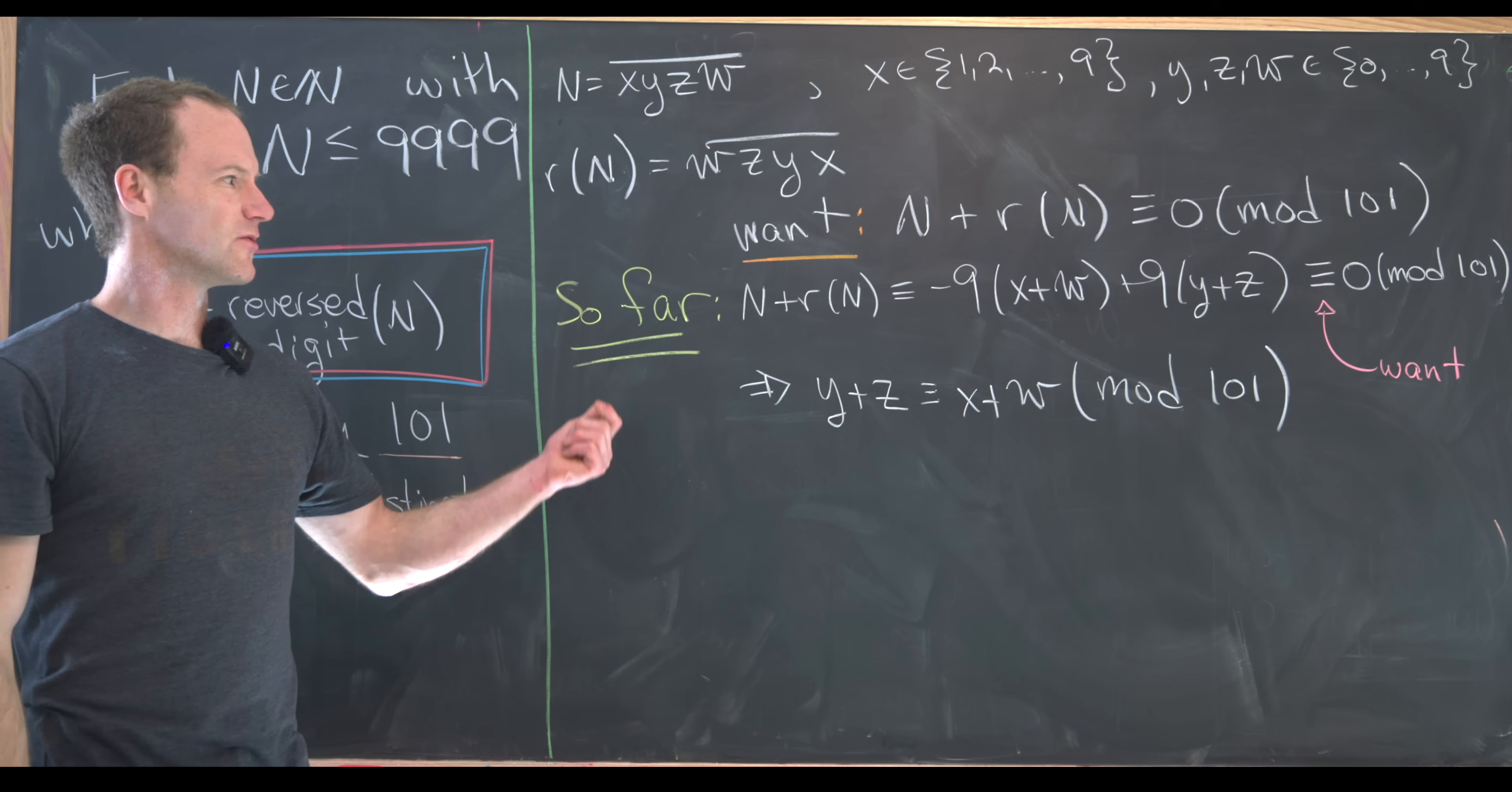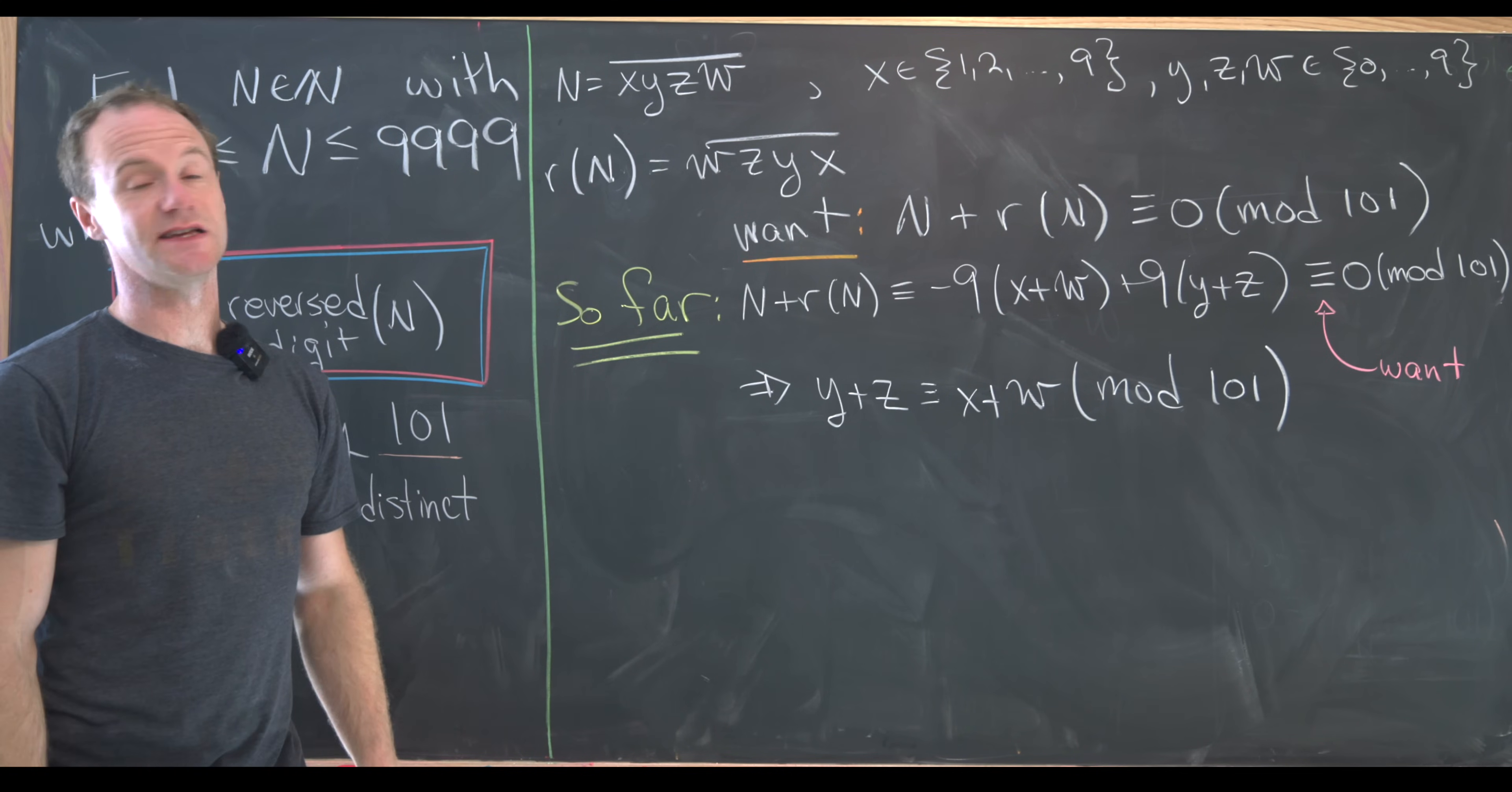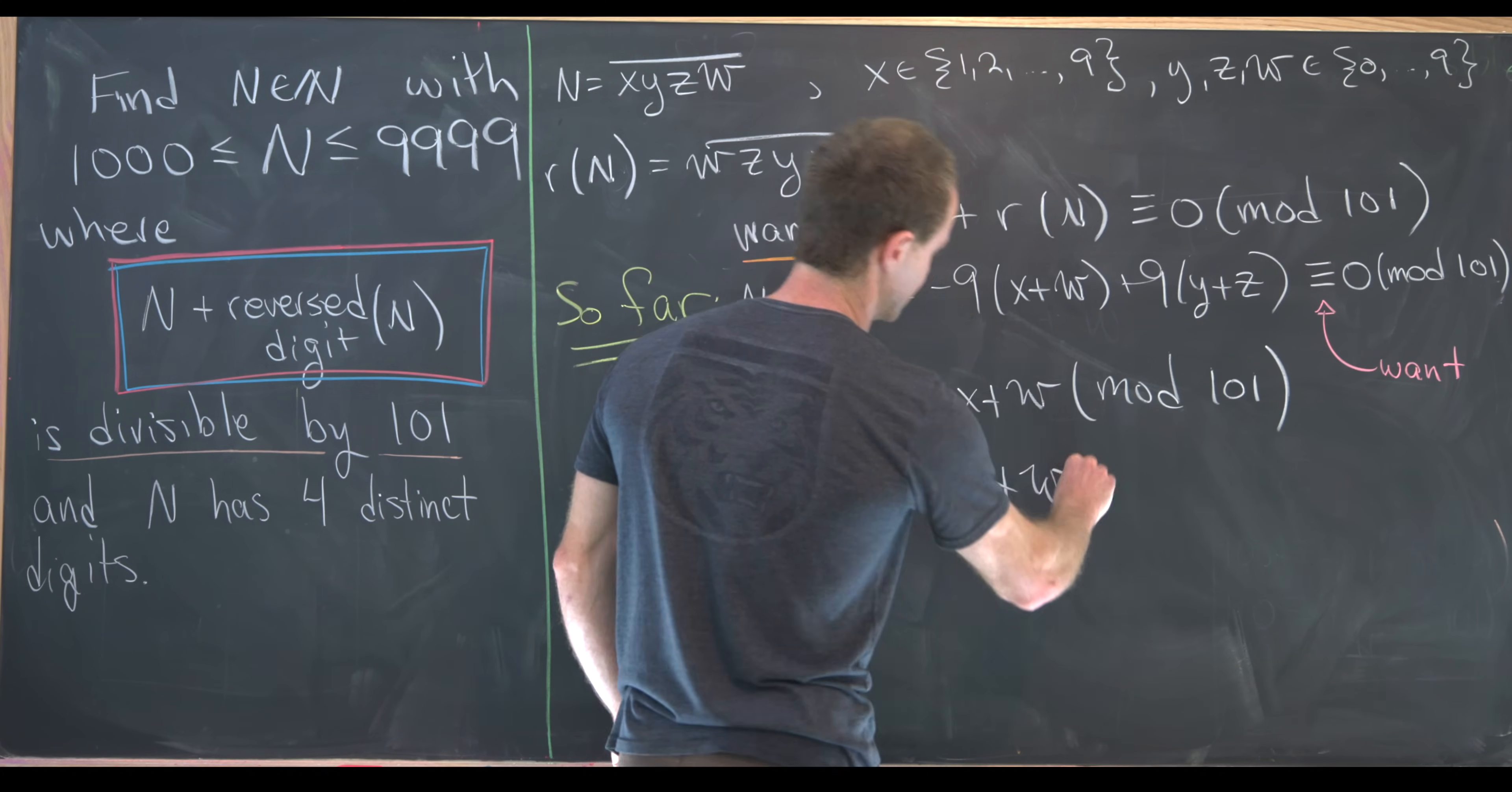But now this is actually more than just a congruence. This can actually be changed to an equality. And that's because by the restriction on the sizes of X, Y, Z, and W, it's impossible for this to loop past 101. So in other words, that means that Y plus Z must be equal to X plus W.